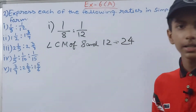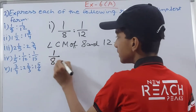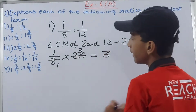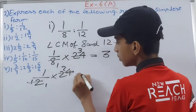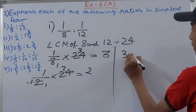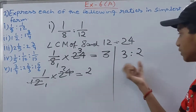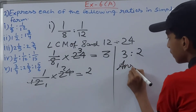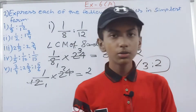The LCM of 8 and 12 is 24. So 1/8 × 24 = 3, and 1/12 × 24 = 2. The ratio becomes 3 : 2. Can we simplify 3 and 2 further? No. So our answer is 3 : 2.